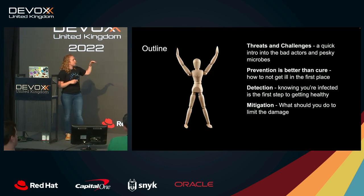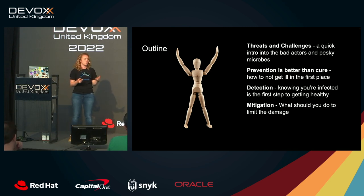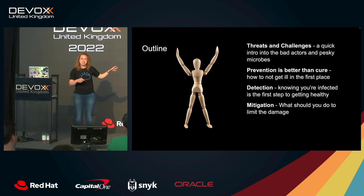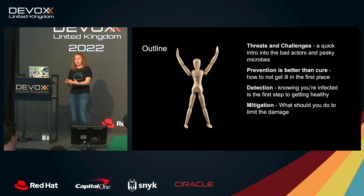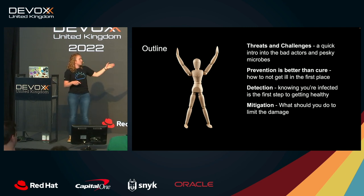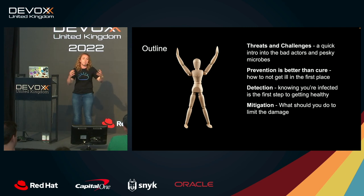These are the various parts of the presentation. We're going to take a quick look at why this matters — the threats and challenges we're facing in software development. Then we go into prevention, because prevention is better than needing anything else in the first place. Then detection: if we don't know we're infected or under attack, how are we supposed to stop it? And finally mitigation: if we are infected, how do we mitigate the impact?